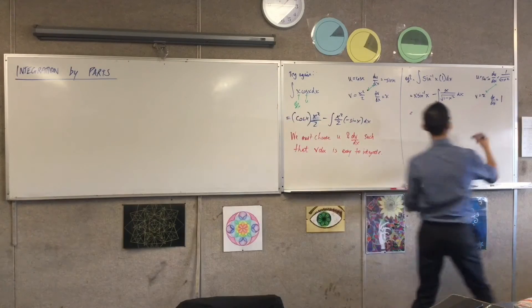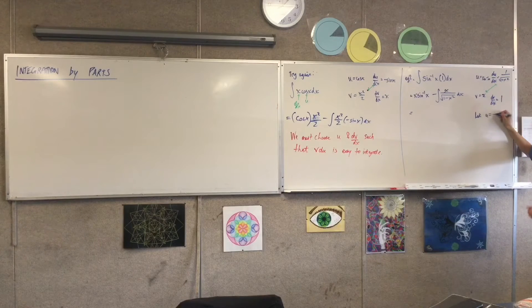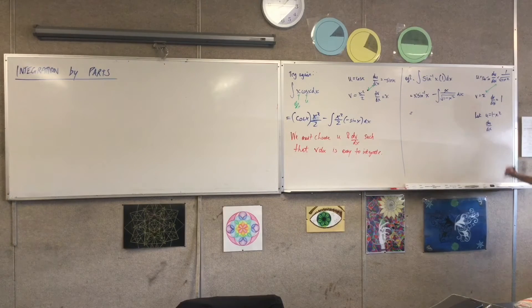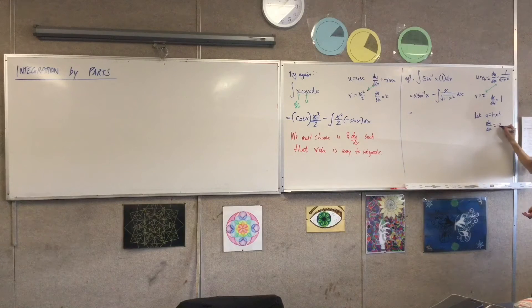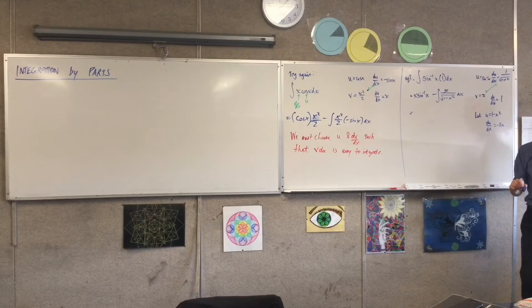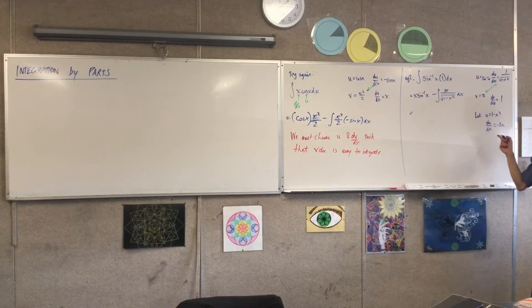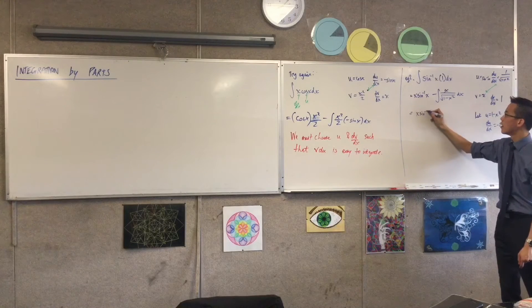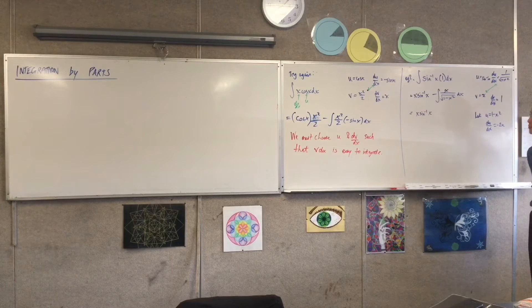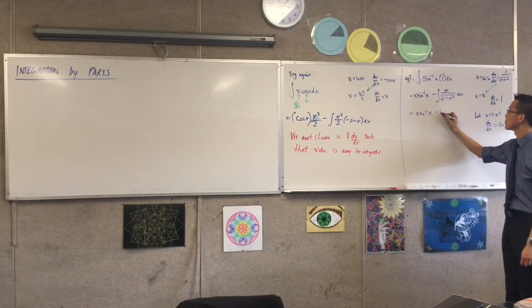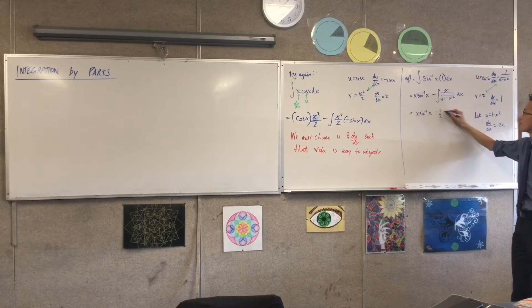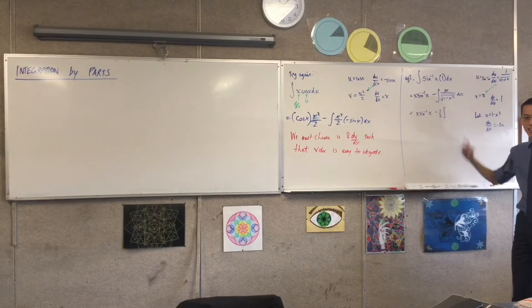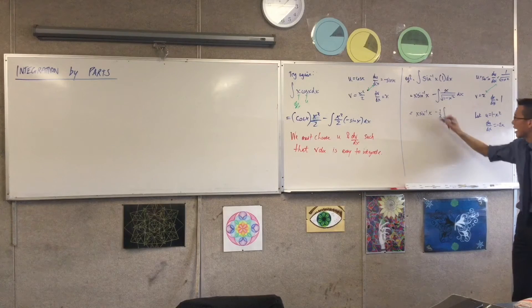Let u equal to 1 minus x squared. Okay, so if I do this, then I can work out what du/dx is. Minus 2x. Or you can just... Well, I mean, that's what I just did, right?